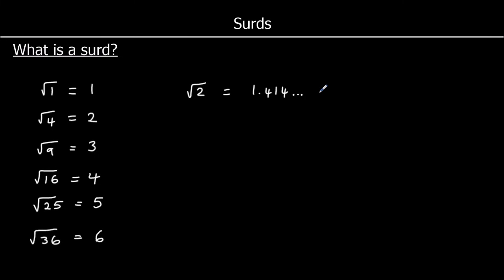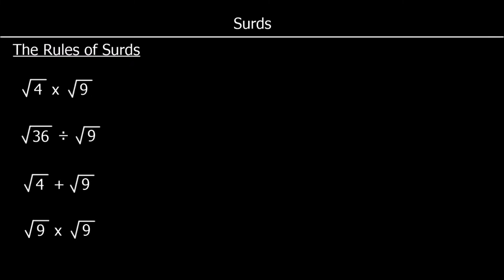We call that an irrational number. So a surd is an irrational number — it's a square root that we can't write as a whole number. Now we're going to look at the rules of multiplying and dividing square roots. I've picked square roots that we can write as whole numbers, and that will be useful for showing you that these rules work.